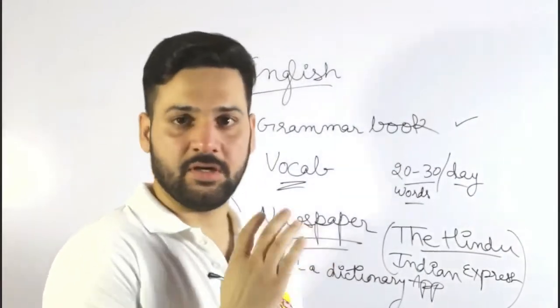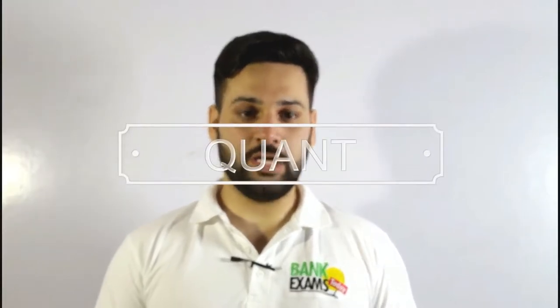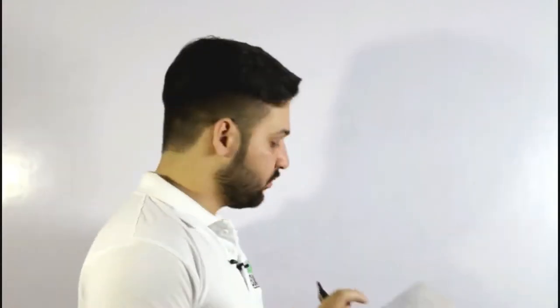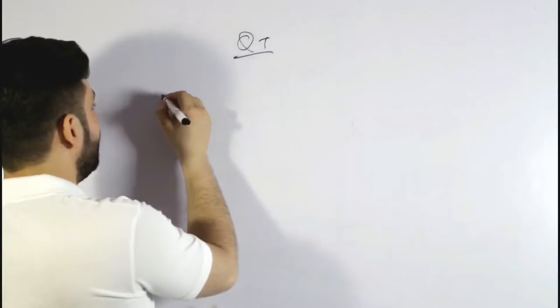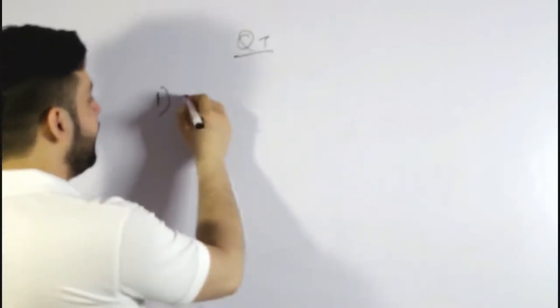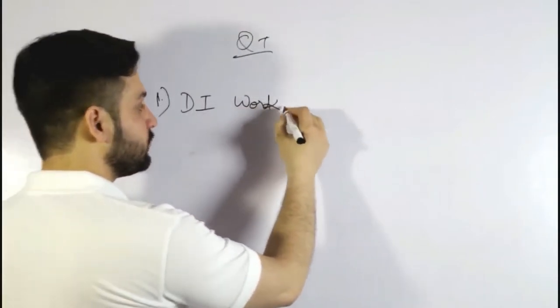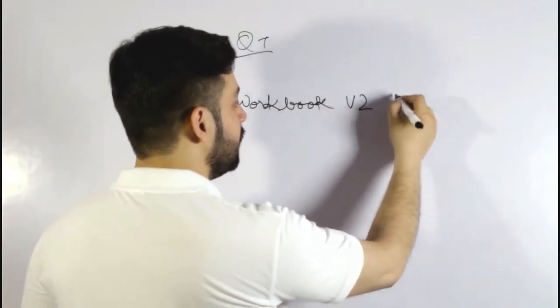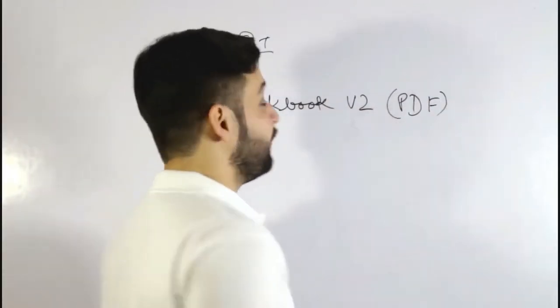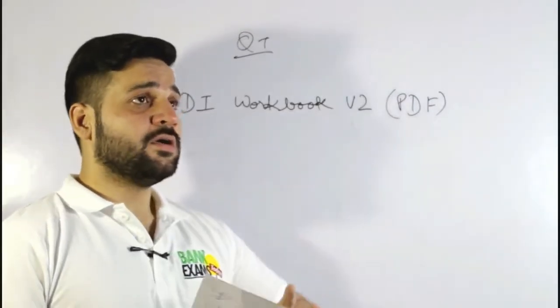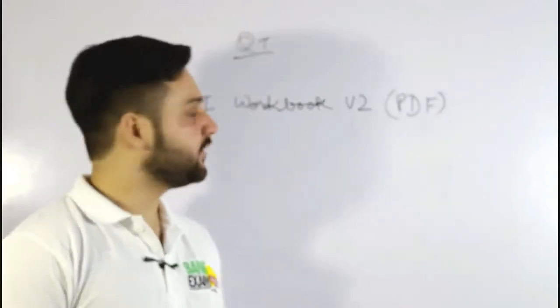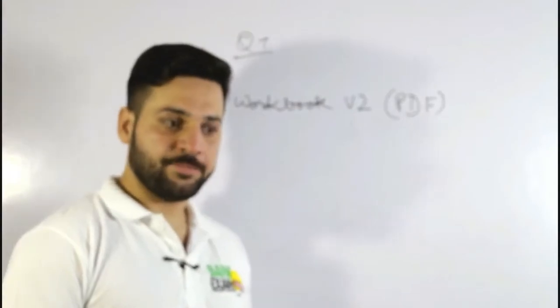Now let's start with the quantitative aptitude section. In the SBI PO Prelims exam you will find at least 10 to 15 questions from the data interpretation part. These are somewhat difficult questions. For DI, I have made the DI Workbook Version 2, available as a free PDF download. It contains about 70 sets of high-level double diagram sets, many picked from previous exams. That ebook is sufficient for the SBI PO Prelims exam.